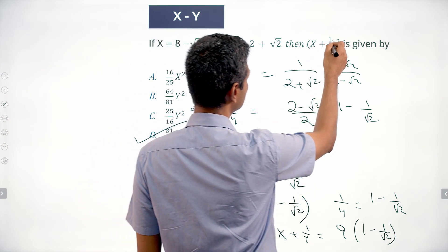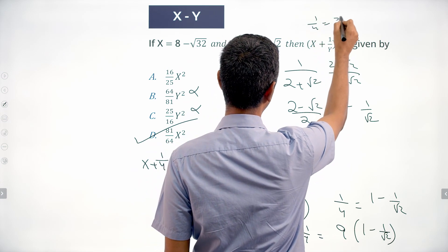And so 1 by y into 8 is x, or 1 by y equals x by 8.